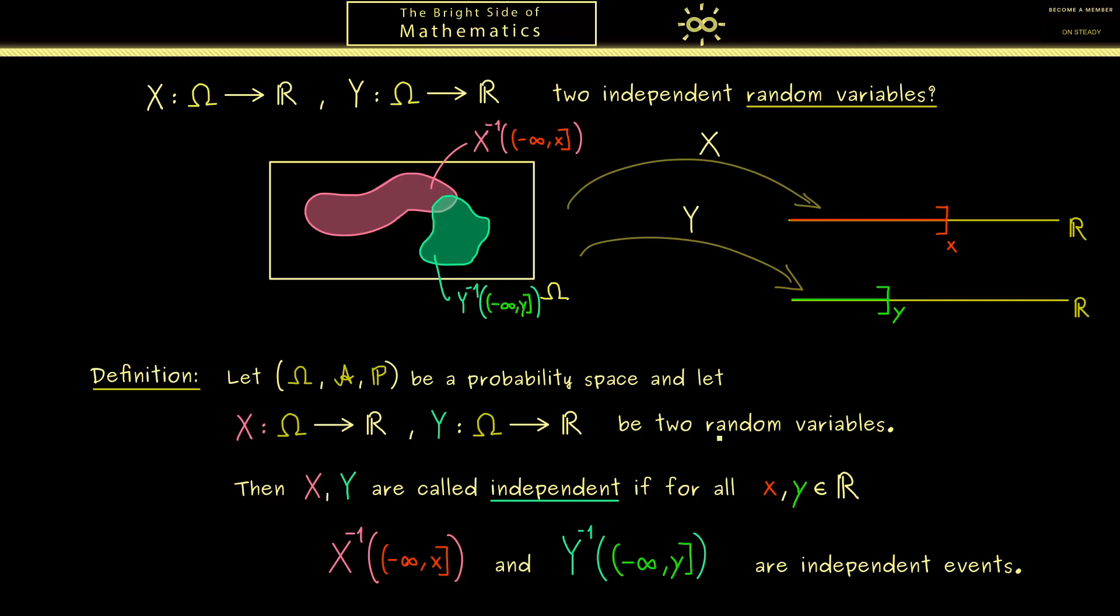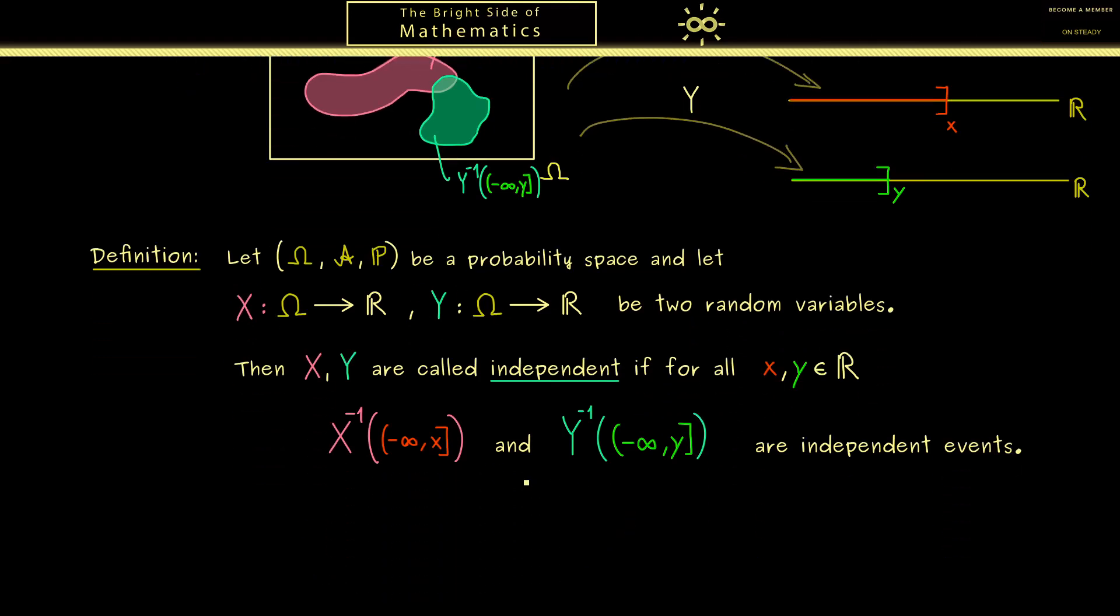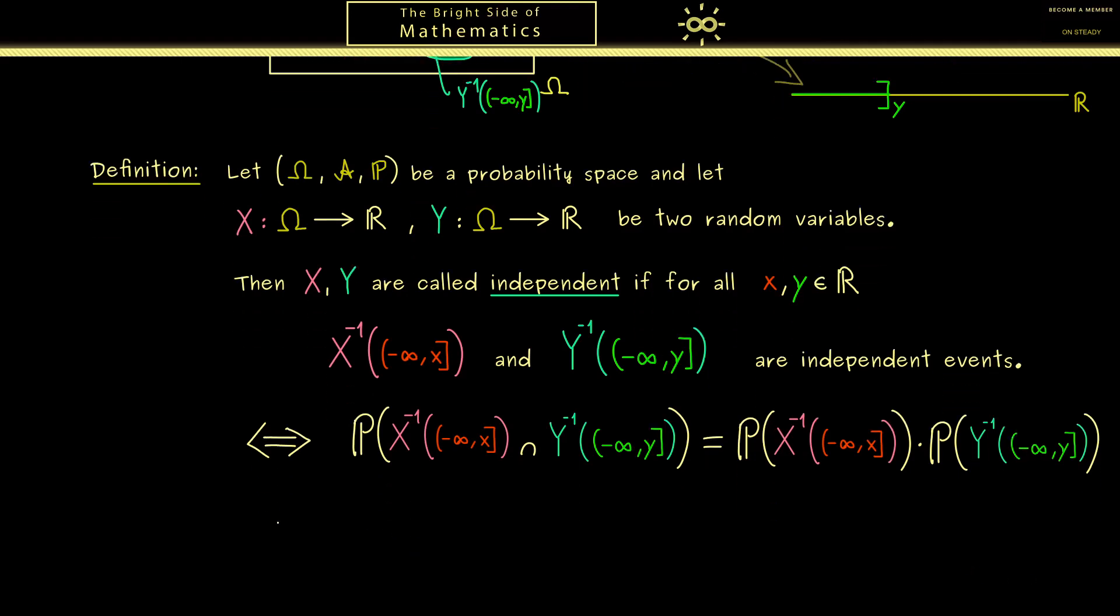Okay, not later than now you should recall what it means that two events are independent. It simply tells us that the intersection inside the probability measure can be rewritten as a product of probabilities. Hence P of the one set intersected with the other set is given as P of the one set times P of the other set.